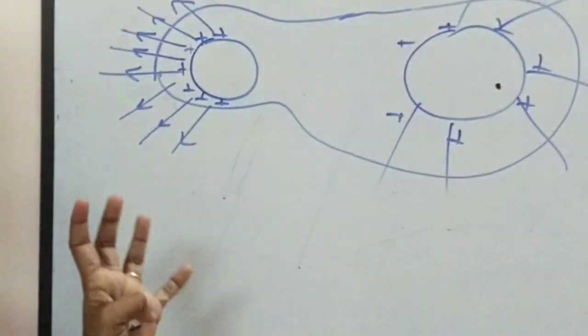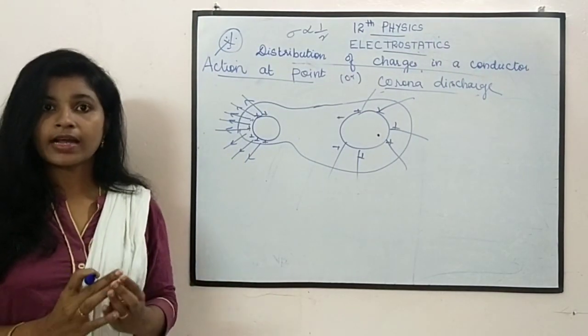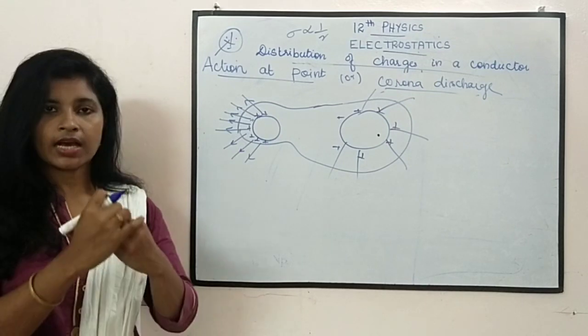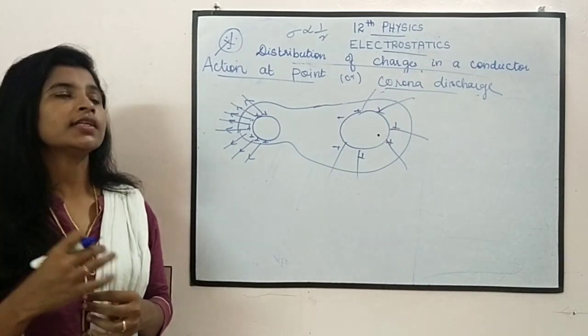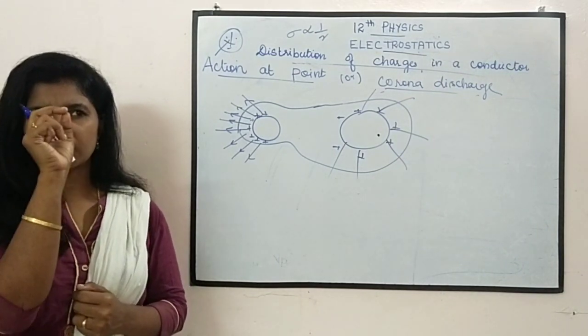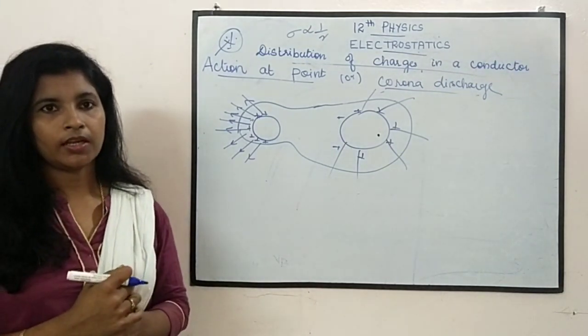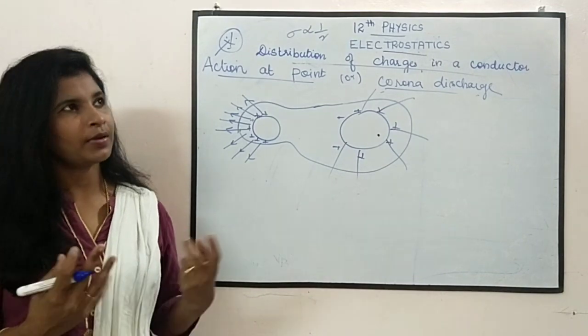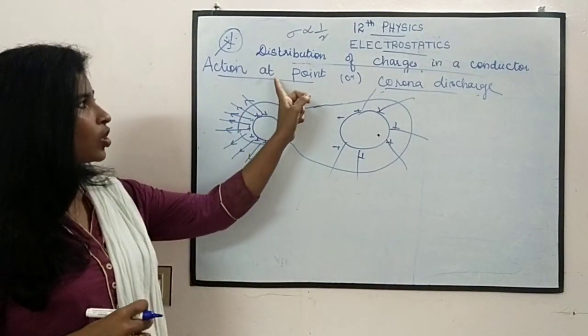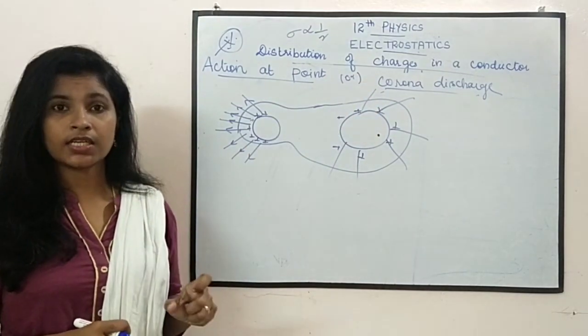In the high charge particle, what it does, you might have seen in the transformers, when you go for a walk at night, you can see near the transformer small sparkles will appear. The reason is that is nothing but because of the corona discharge, action at point.